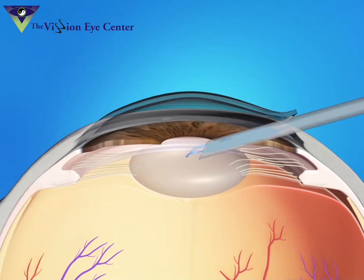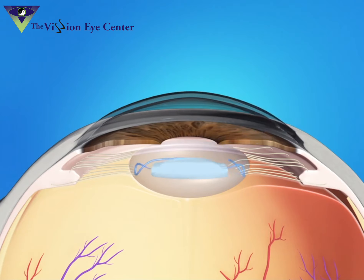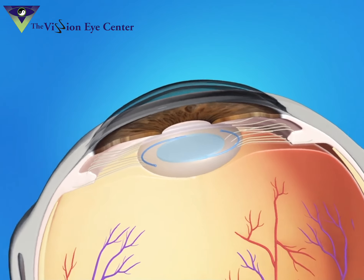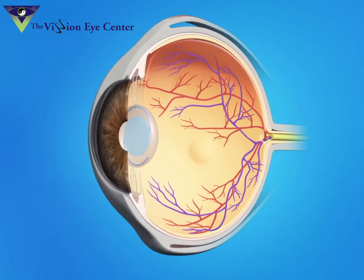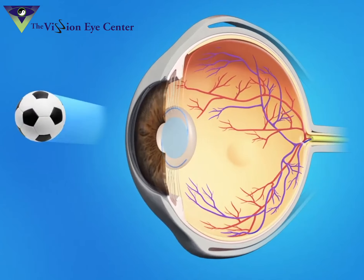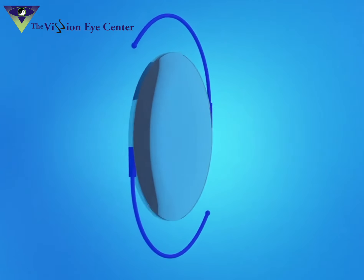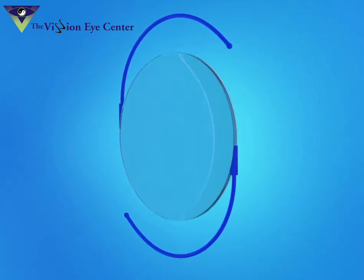The surgeon will then insert an artificial lens into the eye, called an intraocular lens. This lens stays permanently in your eye. The new lens lets light pass through and focus properly on the retina, thus bringing back clear vision.